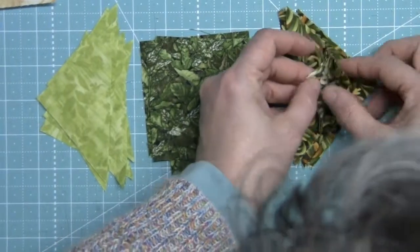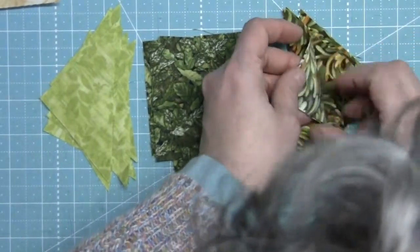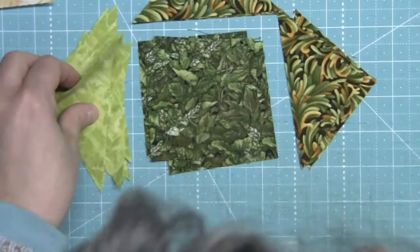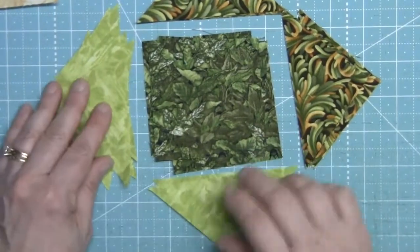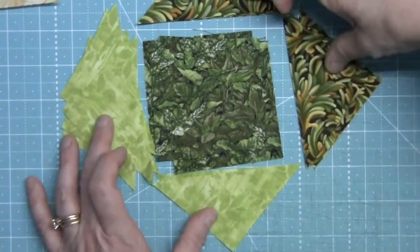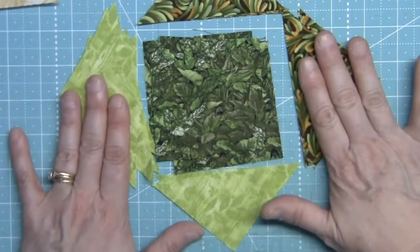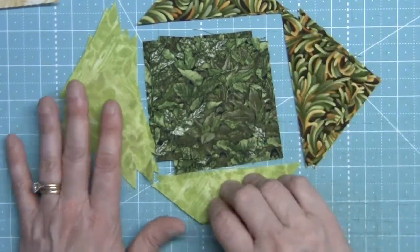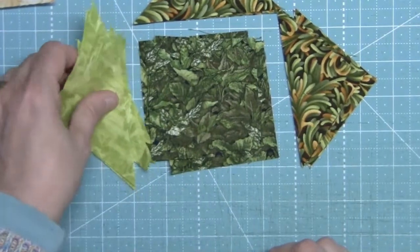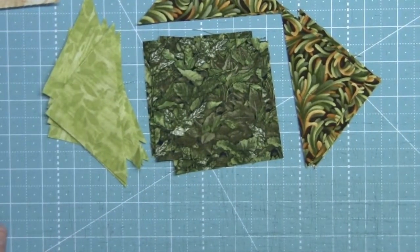And once those are done, we'll come back and do the same thing again, put a B and an F so that we end up with the Fs beside each other and the Bs next to each other. So let me go put on two of them and I'll bring them back here and trim off the dog ears and then we'll line them up to put on the other two triangles.